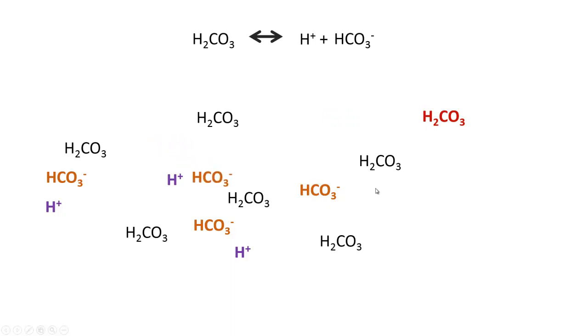Once again, bicarbonate comes in, merges with a hydrogen ion, and creates carbonic acid. Now, we've changed the number of bicarbonates and carbonic acids on our screen, but look at the hydrogen ions. That's the most important thing. We've gone back to having two. So if you add hydrogen ions to your solution, this equation is going to shift to the left. You're going to get more H2CO3 in order to keep that hydrogen ion concentration steady.